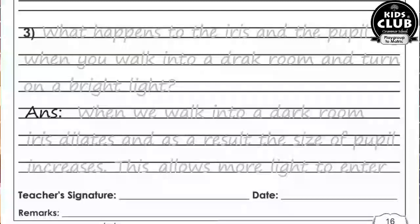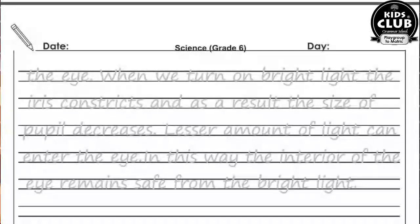Question number three: What happens to the iris and the pupil when you walk into a dark room and turn on a bright light? When we walk into a dark room, the iris dilates and as a result the size of the pupil increases — this allows more light to enter the eye. When you turn on a light bulb, the iris constricts and as a result the size of the pupil decreases, so lesser light enters the eye. In this way the interior of the eye is protected from bright light.